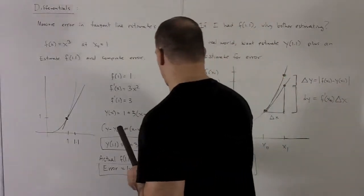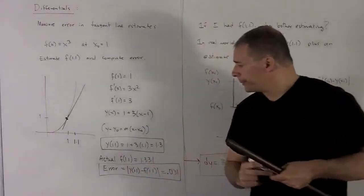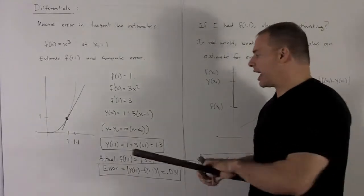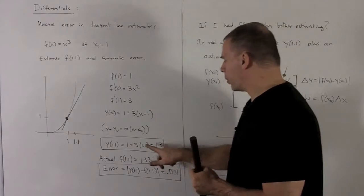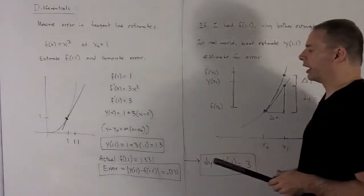So if I want to know what's going on at 1.1, I put that in the tangent line equation. That's going to be 1 plus 3 times 0.1 and that's going to give me 1.3.